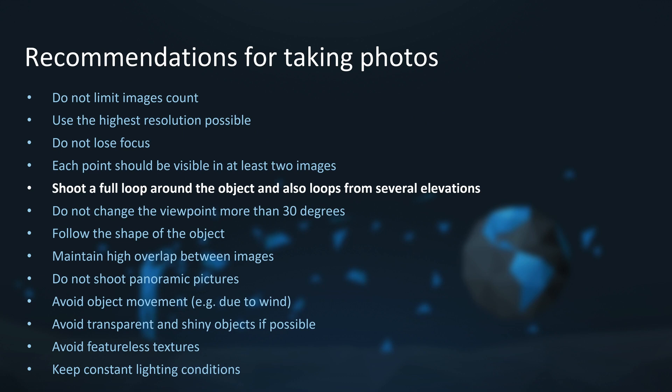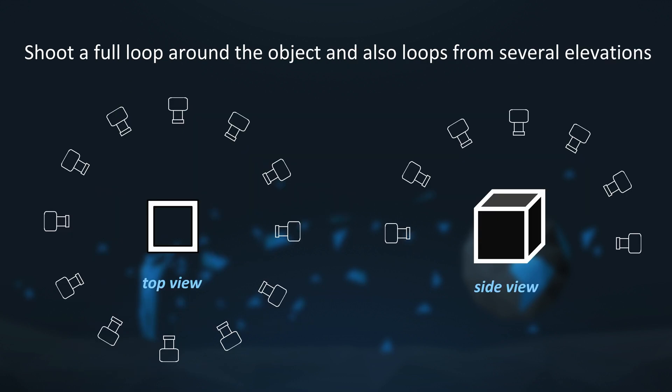When it comes to camera positions and distribution of images, one recommendation is to shoot a full loop around the object, and also loops on several elevations. Keep track of what part of the object you already photographed — start at one point, move around the object incrementally, shoot a full loop, and finish where you started. Make several loops at different elevations.